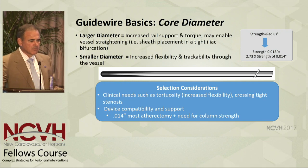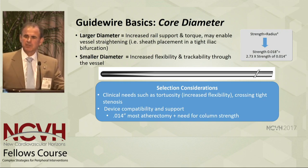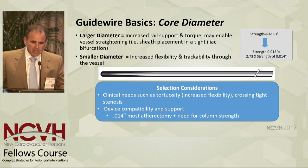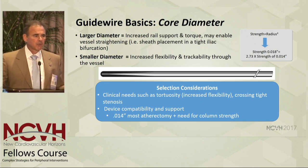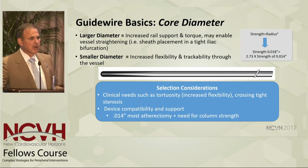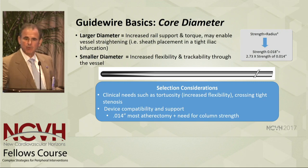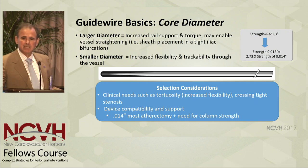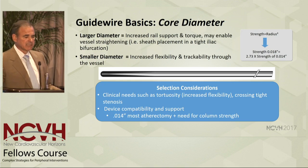The smaller diameter of the wire, the better will be the flexibility and the trackability through a vessel. I hear often people say, what really is the difference between an 018 and 014 wire? Since the columnar support and torque is related to the fourth power of the radius, an 018 wire, if made of the same construct, would have 2.73 times as much torque or columnar shaft support. This is widely misunderstood in the field. Many devices that we use are only compatible with 014 wires, so it's important to understand how we maximize flexibility and ability to cross.